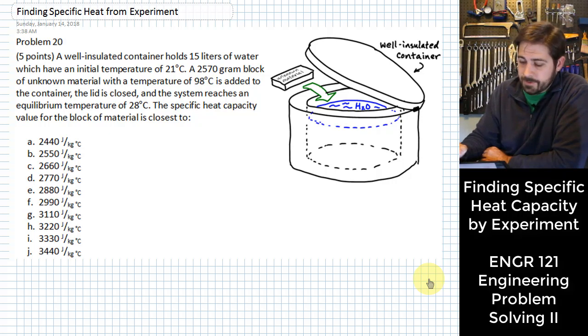So here's the problem: we have 15 liters of water with an initial temperature of 21°C. We put in a 2570 gram block of material at an initial temperature of 98°C, then we close the lid and wait for it to reach equilibrium. The equilibrium temperature it reaches is 28°C, and so we need to find the specific heat capacity for the block of material.